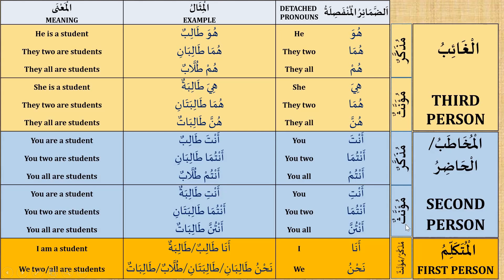And the last two rows are first person. I am a student. Remember, ana can be used for male and female. There is no special dual form — nahnu can be used for dual and plural, so we use it for masculine dual, feminine dual, masculine plural, and feminine plural.